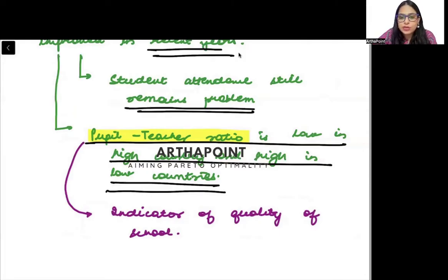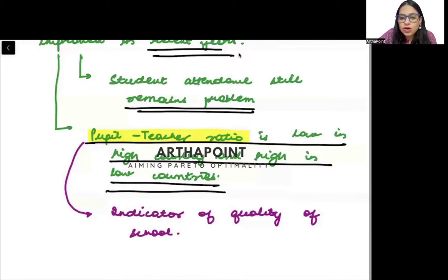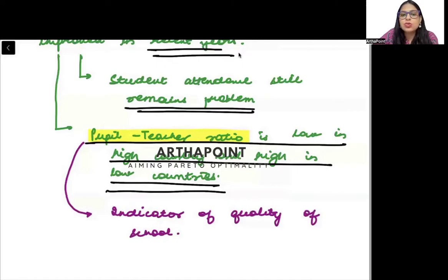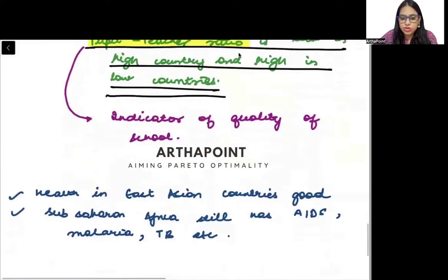The quality of education needs to improve at higher levels, requiring more personal attention and a low teacher-student ratio. All students aiming for civil service should keep in mind that whenever they generate an indicator of quality of schooling — whether for countries or states — the teacher-student ratio is a very important thing to understand.